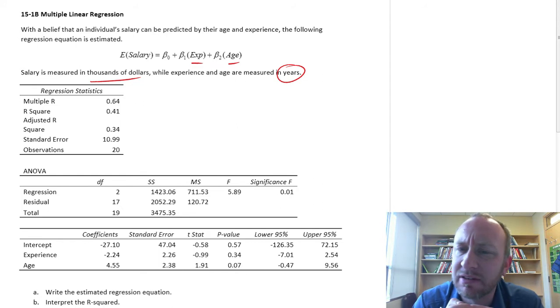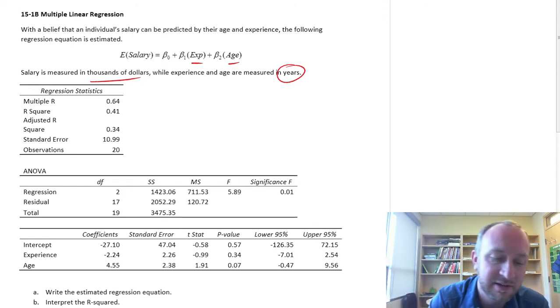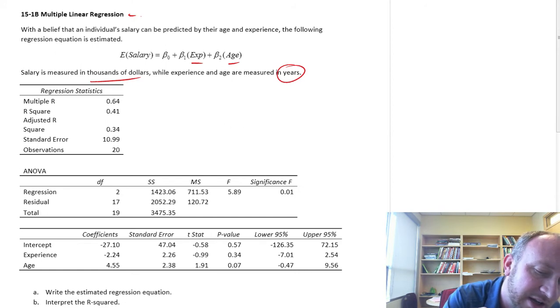The older you are, the more experience you're likely to have. This exercise is going to be actually looking at something called multicollinearity.